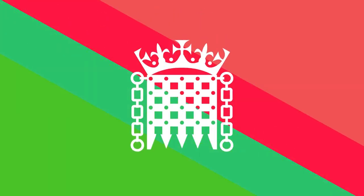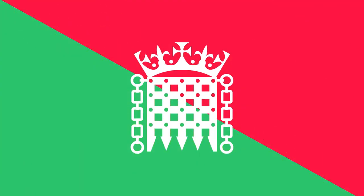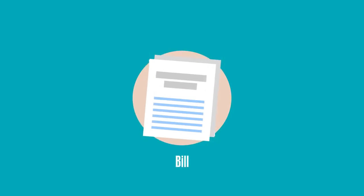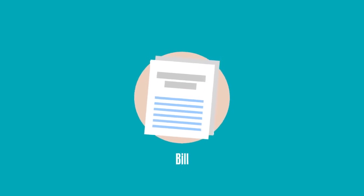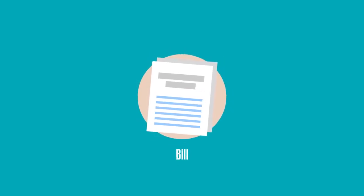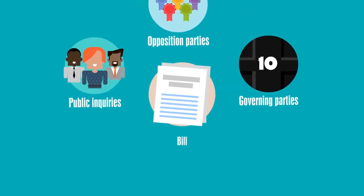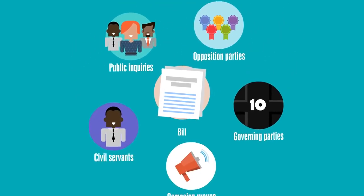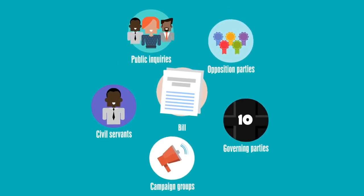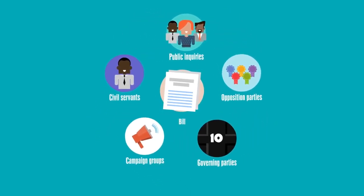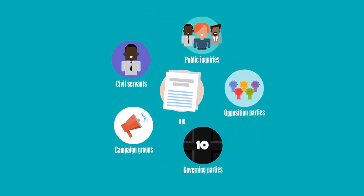Both Houses in Parliament share responsibility for making and shaping laws. But where do laws come from in the first place? A bill is a proposal for a new law, or to change an existing law, and comes from lots of places, like governing and opposition parties, public enquiries, civil servants, or campaign groups.